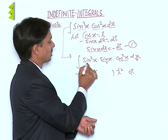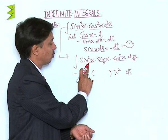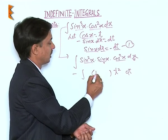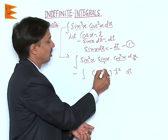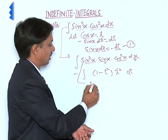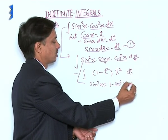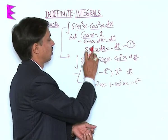And what about this sin²x? You can notice this sin²x is 1 minus cos²x that is 1 minus t². You must understand that sin²x can be written as 1 minus cos²x that is 1 minus t² because cos x is t.